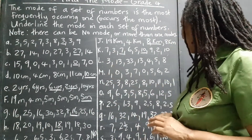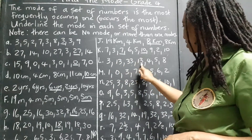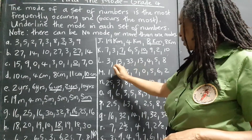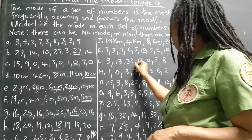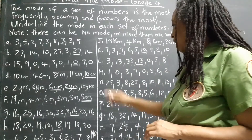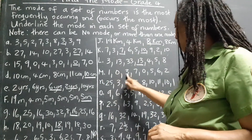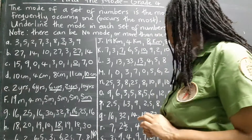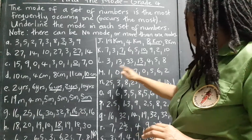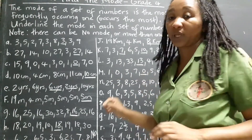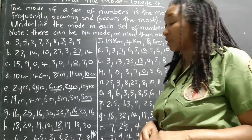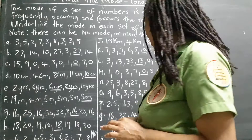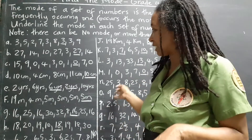Set L: 3, 13, 33, 13, 4, 5, 8. There are two 13s and only one of each other number, so 13 is the mode. Set M: 1, 0, 3, 3, 7, 0, 5, 6, 2. Wait — the zero appears twice and only one of the others, so zero is the most frequent one. Zero is representing! I'm always proud of my zeros.